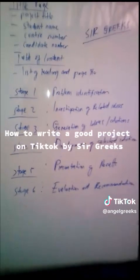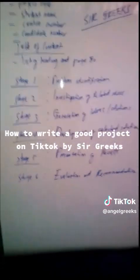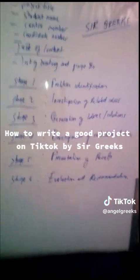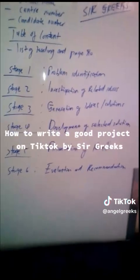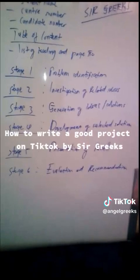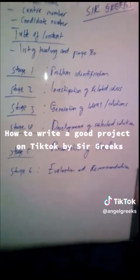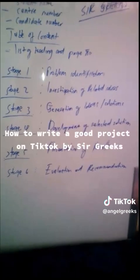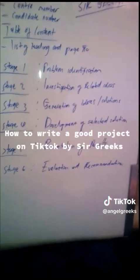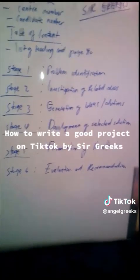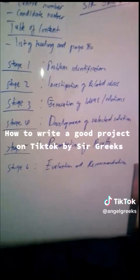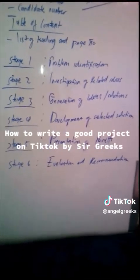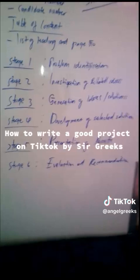Stage number two is the investigation of related ideas. You must go onto the internet and find ideas or solutions that were used in the past to reduce the problem. On stage one you described the problem; now on stage two you investigate past solutions to that problem. You must list at least four solutions.